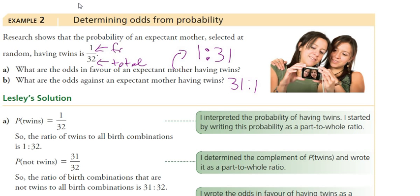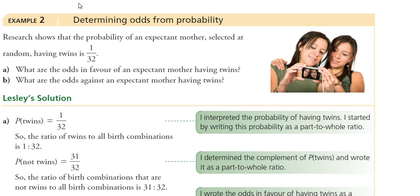Remember, favorable doesn't mean good or bad — favorable is simply the thing we want to happen. Unfavorable is the thing we don't want to count. If you get a probability, total minus favorable gives you unfavorable. When you have odds, add favorable and unfavorable together to get the total.